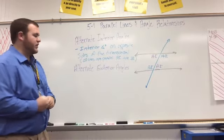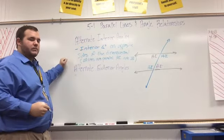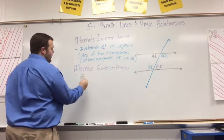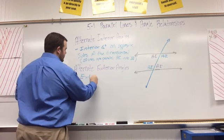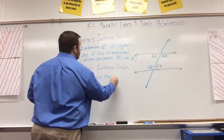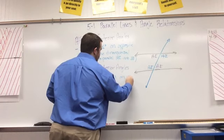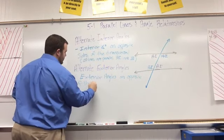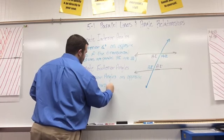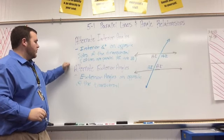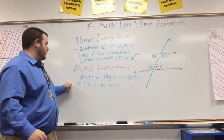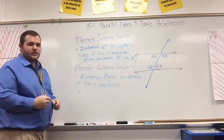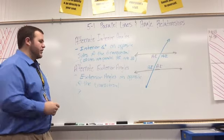You can probably guess what alternate exterior angles are — it's the same concept as interior angles but we're dealing with the outsides of the parallel lines. Alternate exterior angles are exterior angles on opposite sides of the transversal. If the lines are parallel, alternate exterior angles are congruent.